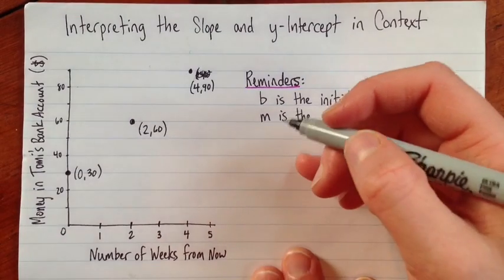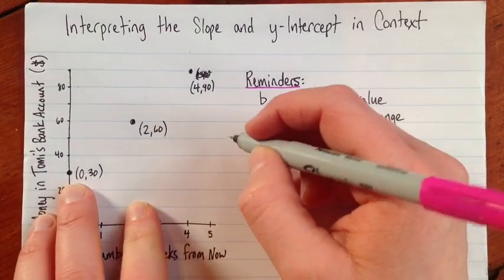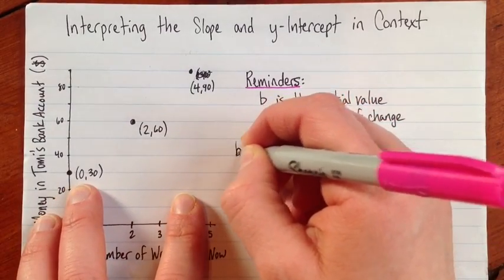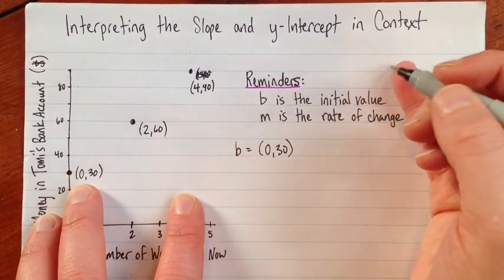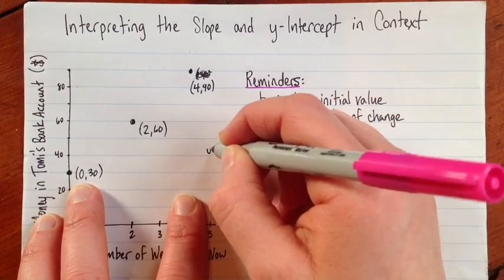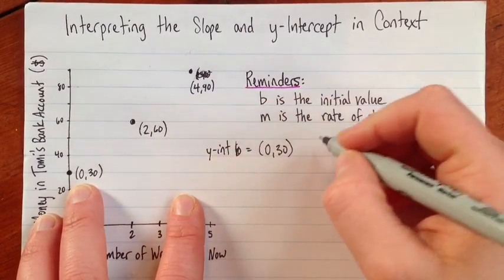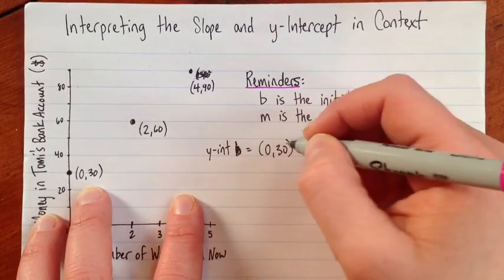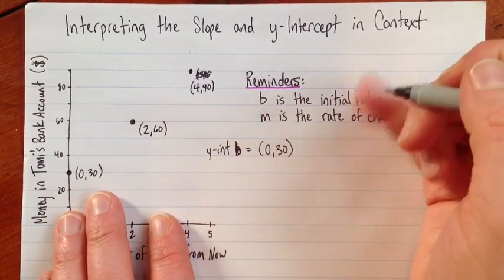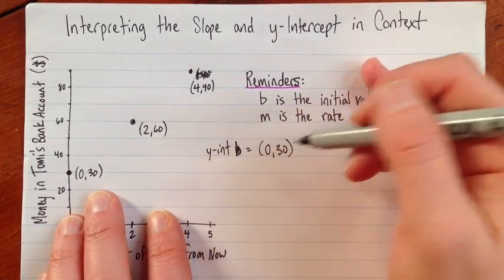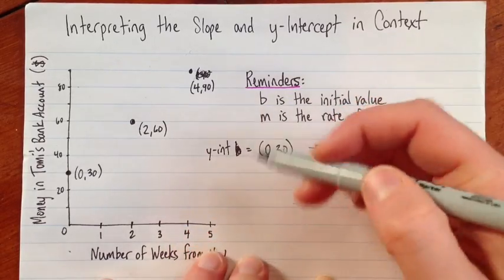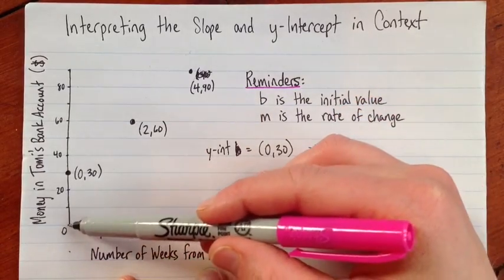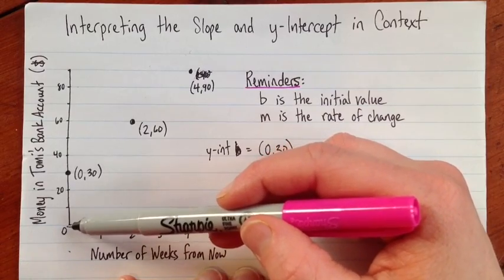First of all here, we've got that the y-intercept is the (0,30). And sometimes we'll say that the y-intercept is 30, because this x-value is always 0. So the b-value here is 30. And what this tells us is that when 0 weeks from now, so what does that mean? Of course, that means right now.